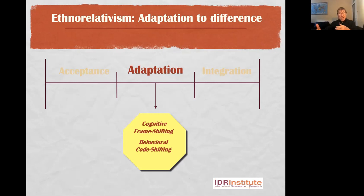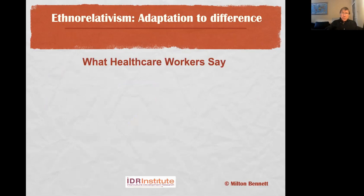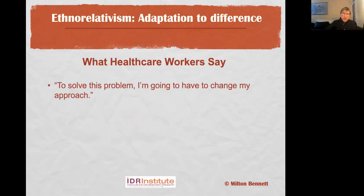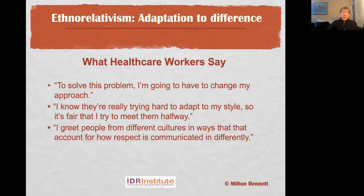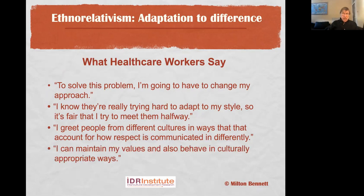Adaptation has to do with using empathy, framing, shifting your frame of reference, and eventually being able to generate alternative behavior — it's called code shifting, where you're able to generate authentic behavior in a different culture. What people say at the stage of adaptation: 'To solve this problem, I'm going to have to change my approach, change my behavior.' 'I know they're trying to adapt to me, so it's fair that I meet them halfway.' 'I greet people from other cultures differently.' In all cases, you can maintain your values and be yourself, but be yourself in culturally diverse ways.